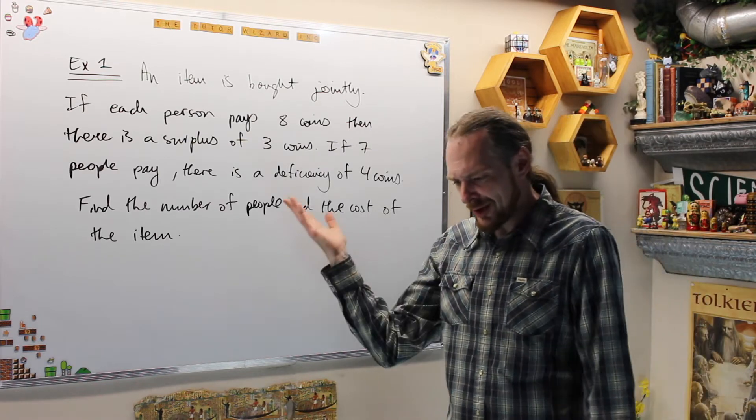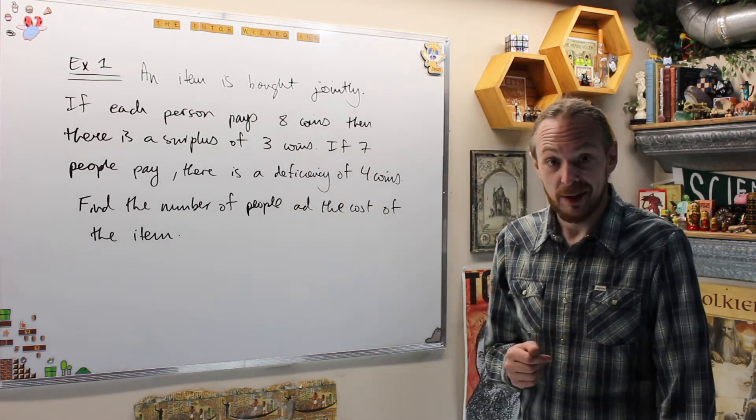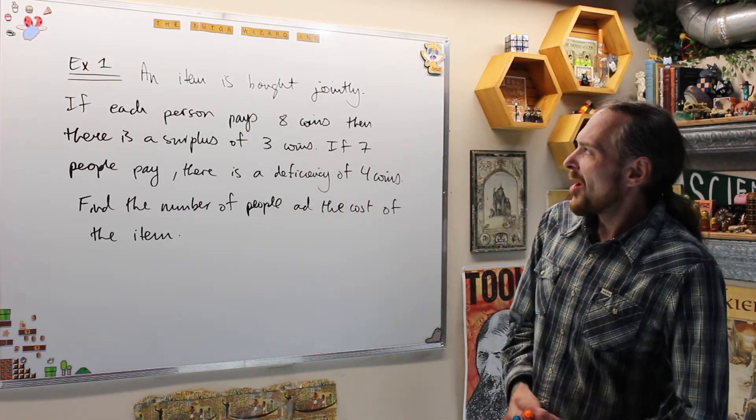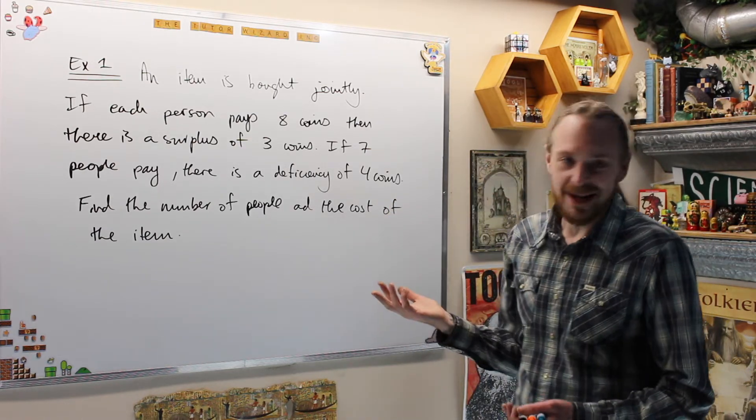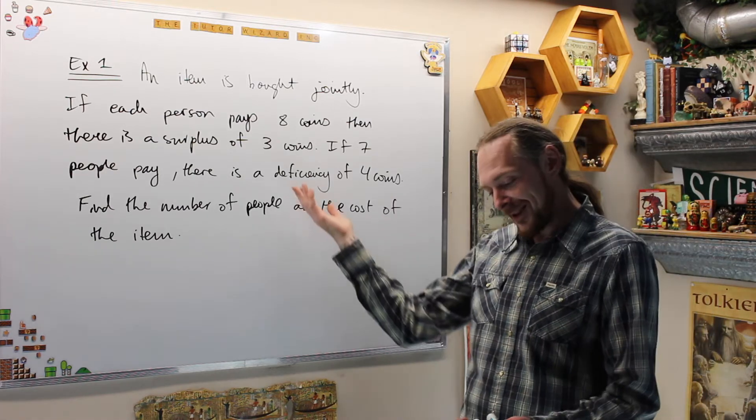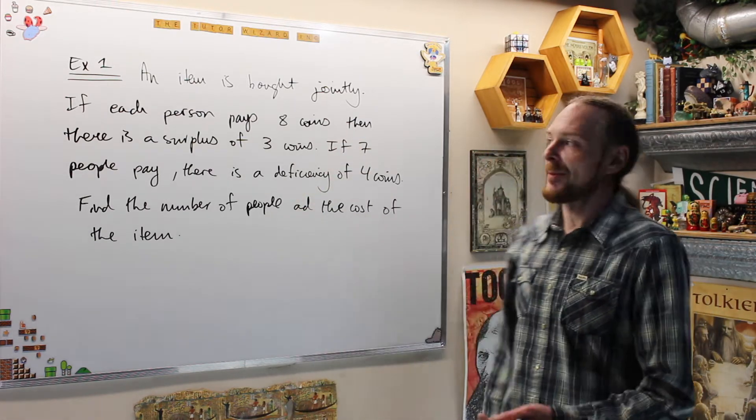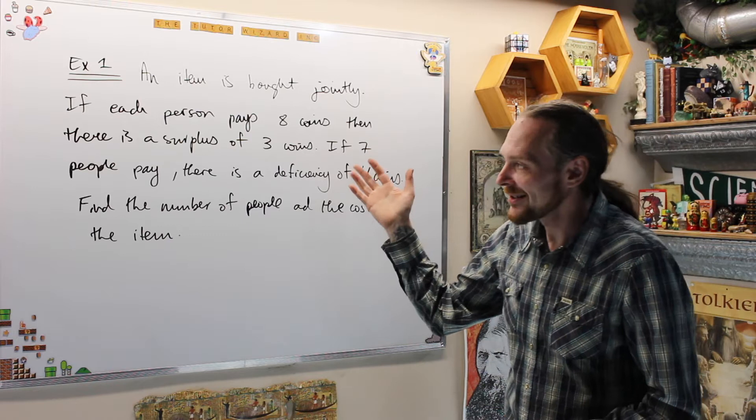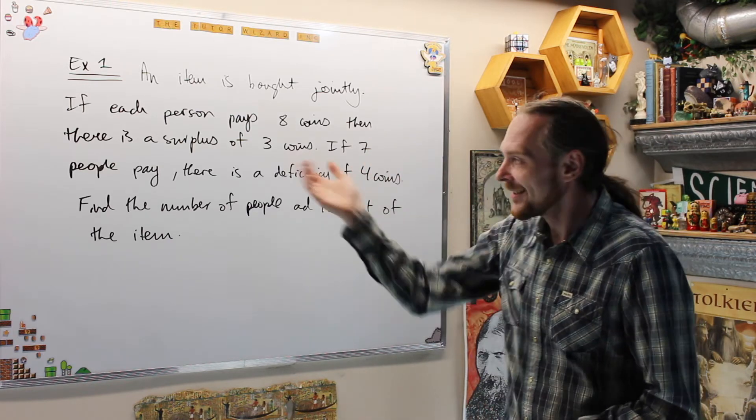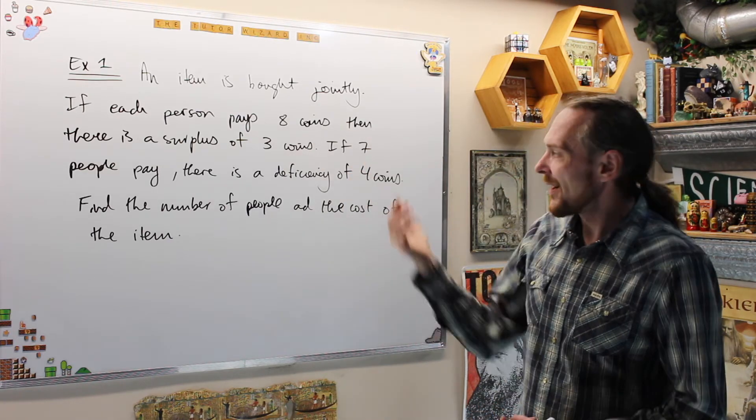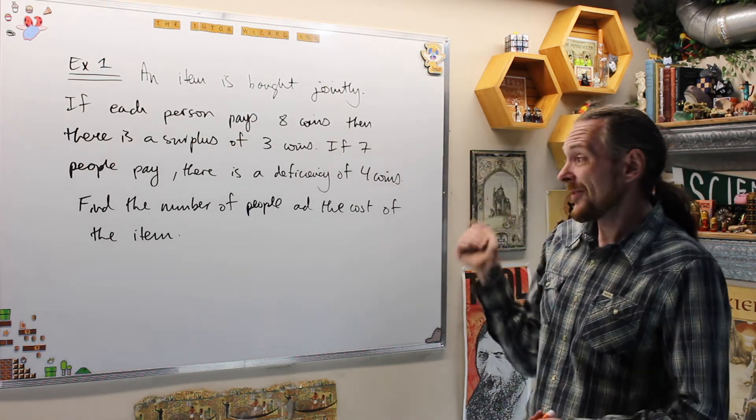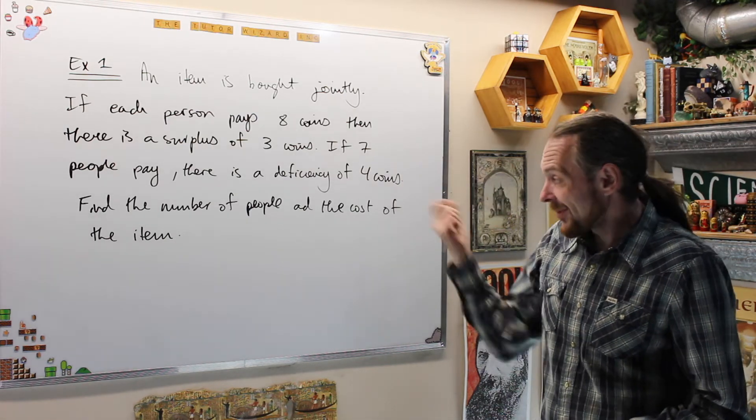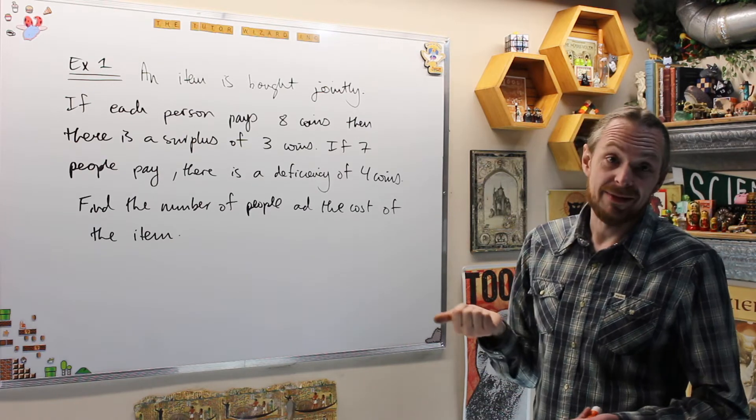These are all going to be linear because I want to phrase motivating examples using linear equations. I have an item which is bought jointly because they couldn't afford one on their own. If each person pays eight coins, then there's a surplus of three coins. If seven people pay, there's a deficiency of four coins. Find the number of people and the cost of the items.